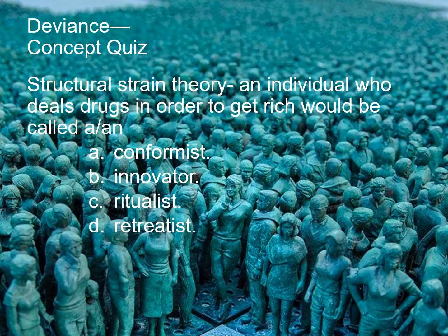According to structural strain theory, an individual who deals drugs in order to get rich will be called: A. A conformist, B. An innovator, C. A ritualist, or D. A retreatist. The answer is B, innovator.